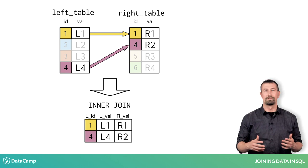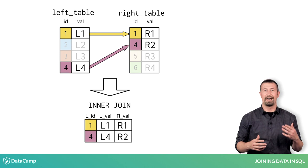Here's a resulting single table from the inner join clause that gives the val field from the right table with records corresponding to only those with ID value of one or four, which are colored as yellow and purple.